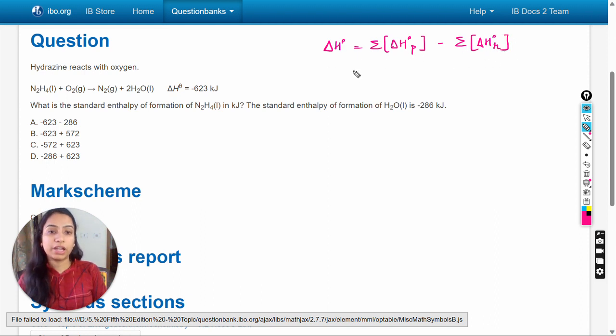So this is the formula and we will put the values here. The standard enthalpy change for the reaction is -623 kilojoules.